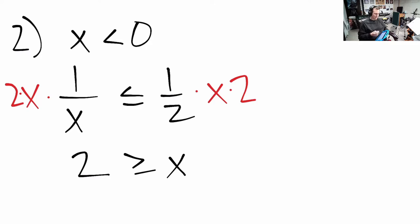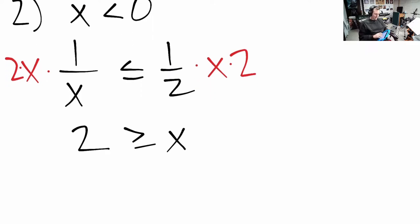Okay, so we've got something here which is actually quite nice. We've flipped the direction. We get 2 ≥ x. What does this mean? Does this mean